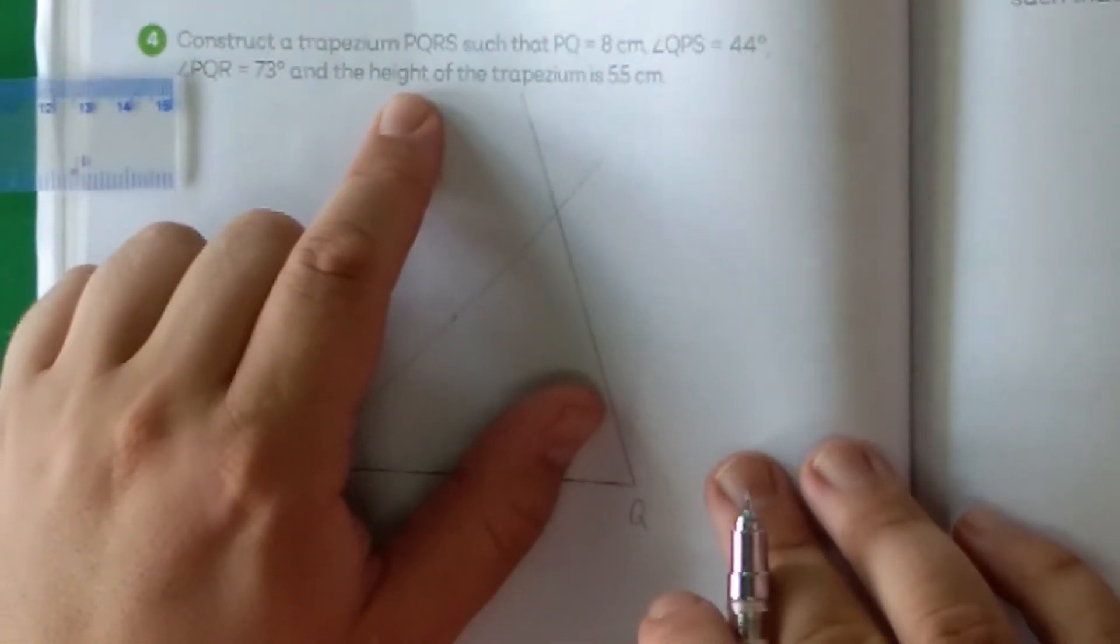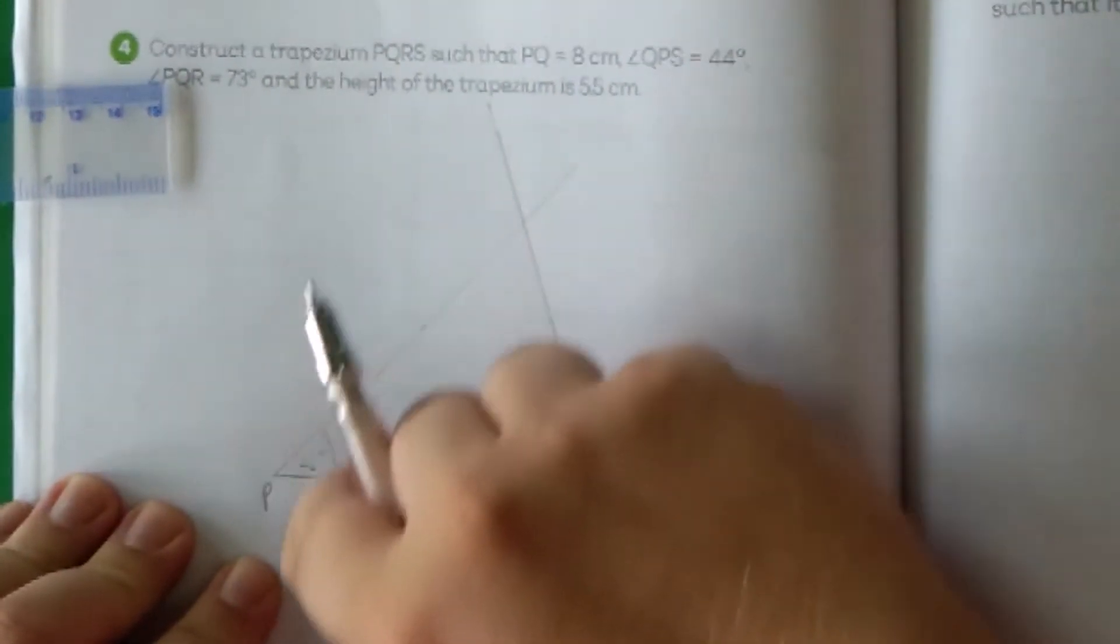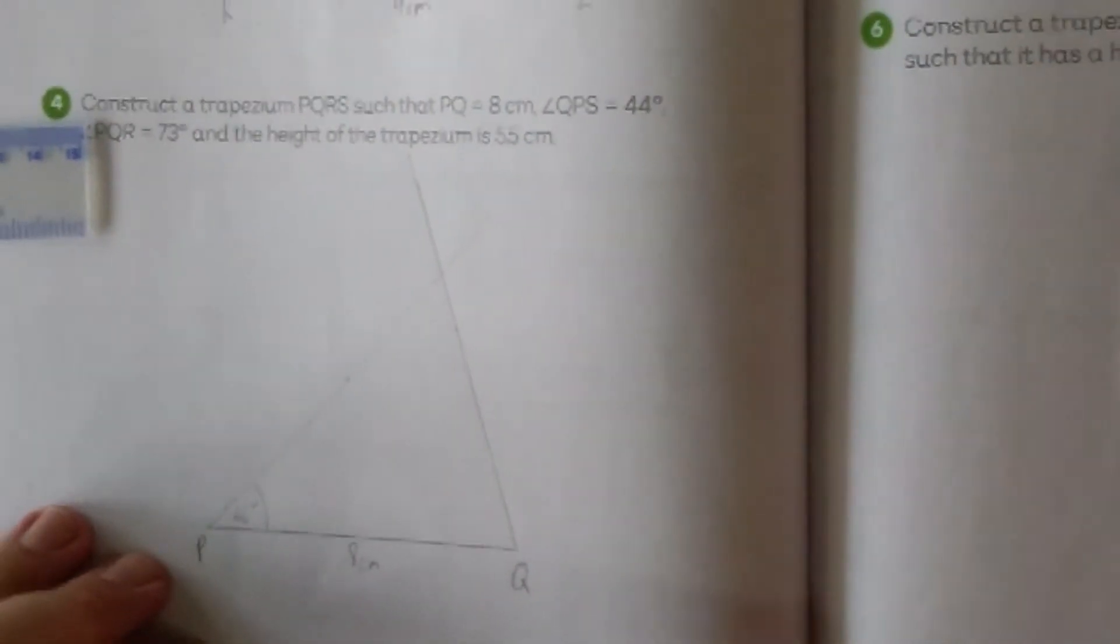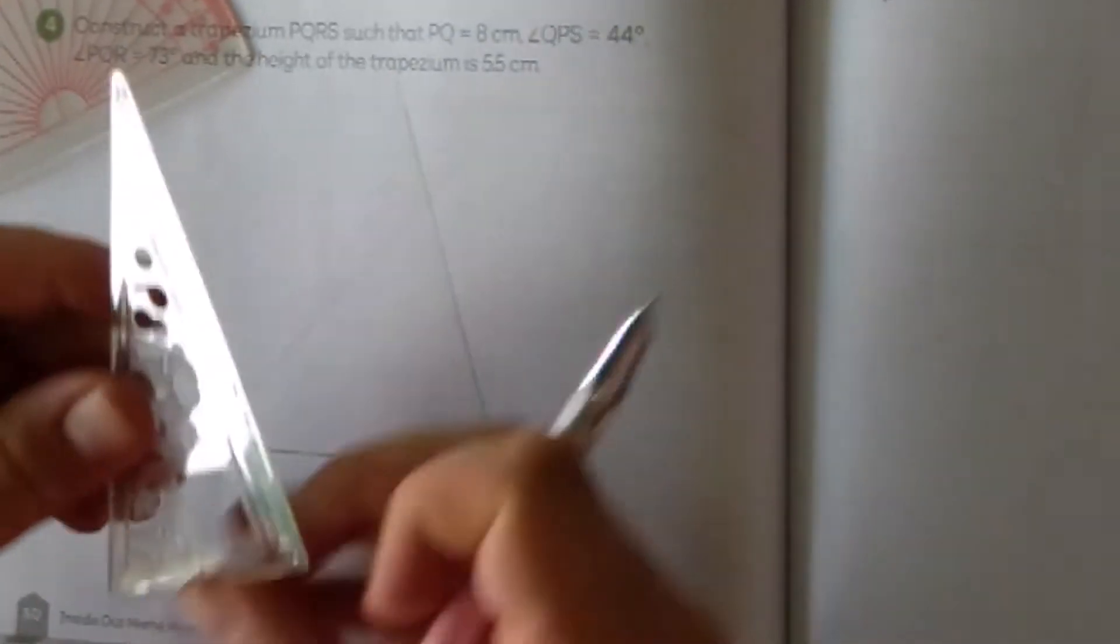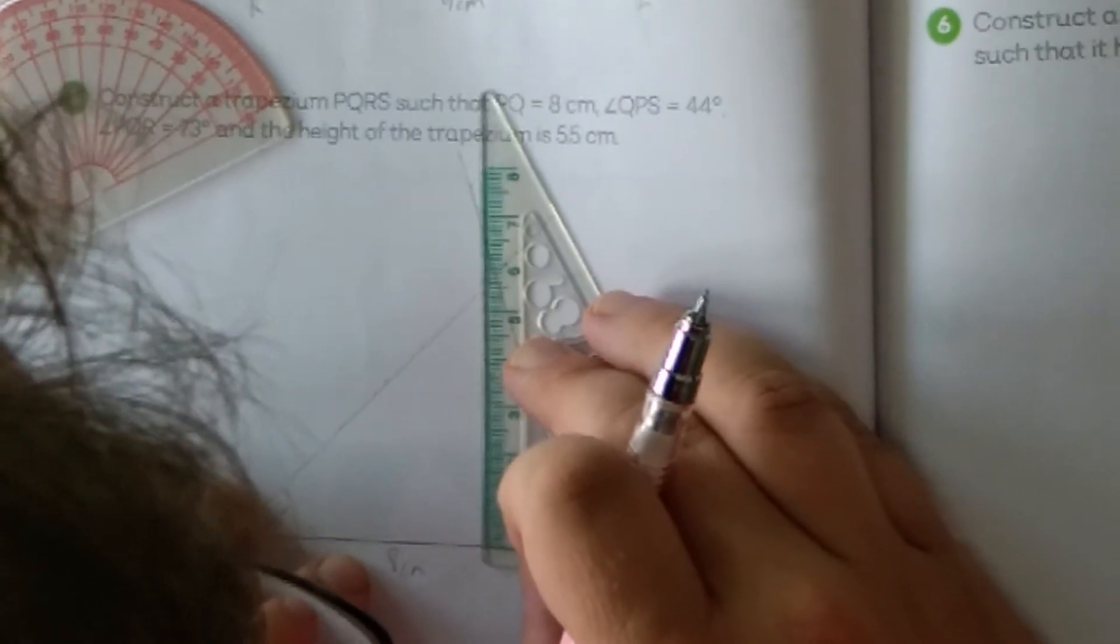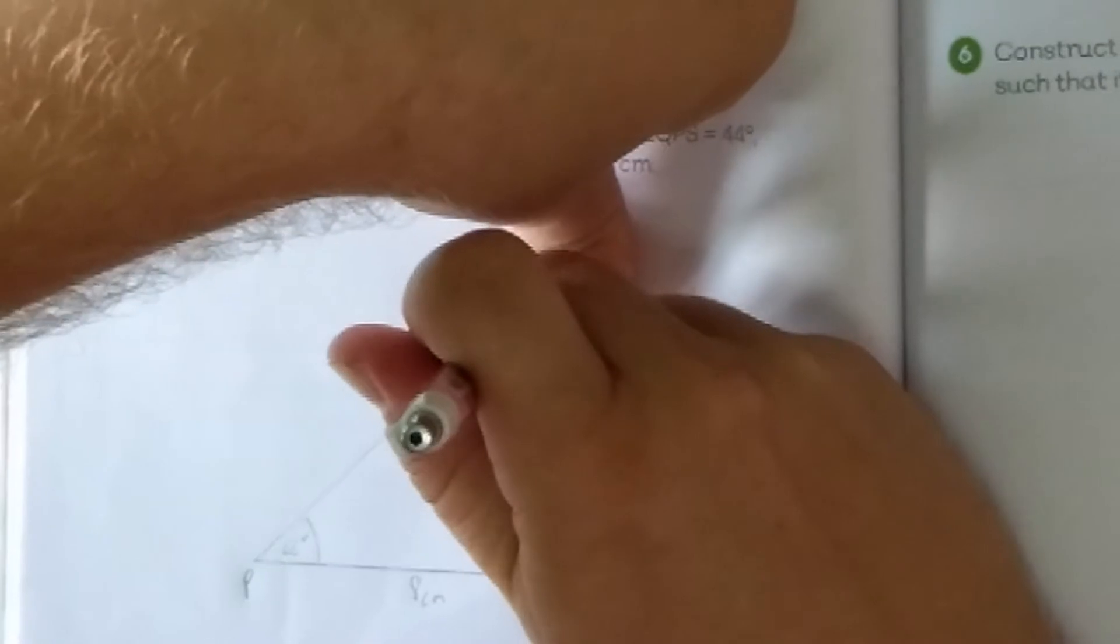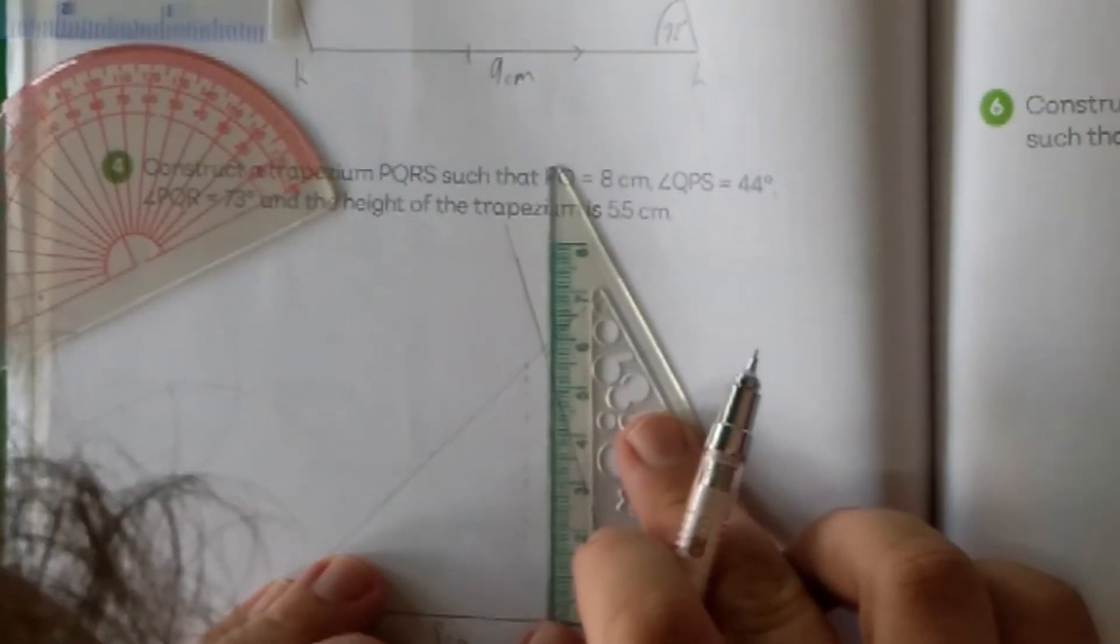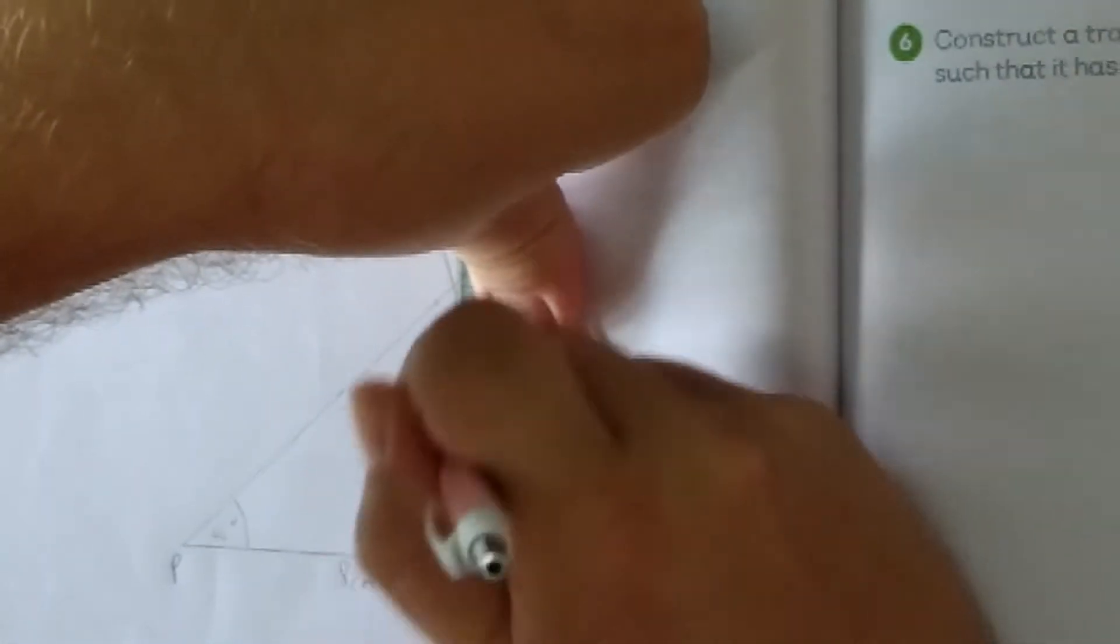This is not supposed to be a triangle. This is a trapezium, and a trapezium has another side on the top. That side will also be parallel to this line here, P and Q, so PQ will be parallel to RS. What we need to use is our height. We know the height of the trapezium is 5.5 degrees. Let's see where on this line 5.5 degrees from the base is. Essentially, let's form a triangle. For this one, I'm going to use a set square. If you'd like, you can use your protractor to find 90 degrees. I think this is one of the benefits of a set square.